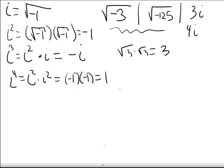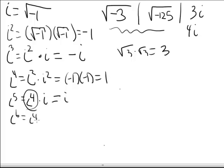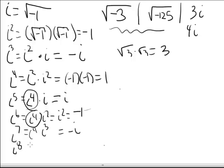Let's keep track of these. i to the fifth is i to the fourth times i. i to the fourth is just one, so i to the fifth is i. i to the sixth is i to the fourth times i squared, which is just i squared, or negative one. i to the seventh is i to the fourth times i cubed, which is just i cubed — negative i. i to the eighth is i to the fourth times i to the fourth, which is one times one, or one.